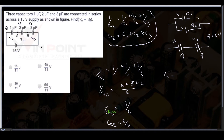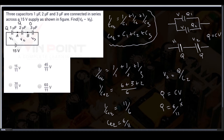The equation for V2 is Q by C2. But first we need to find Q. Q equals C equivalent into V, so Q equals 6 by 11 into 15 volts, which gives Q equal to 90 by 11 microcoulombs. This charge Q is the same everywhere in the series circuit — 90 by 11 microcoulombs.